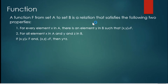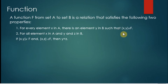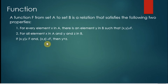Here is the definition of a function. It is a relation that satisfies two conditions. The first condition says that for every element x in A, there is an element y in B such that the ordered pair (x, y) is an element of f. The second condition says that for all x in A and y and z in B, if (x, y) and (x, z) are elements of f, then y equals z.